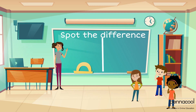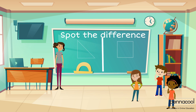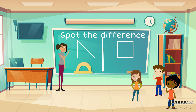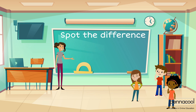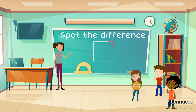In Samantha's math class, her teacher, Miss Allie, decides to play a game of spot the difference with plane shapes. In the game, Miss Allie puts two shapes side by side and asks the class to point out the differences. Before the game begins, Miss Allie reminds her students to look for differences in the sides of each shape as well as the corners.